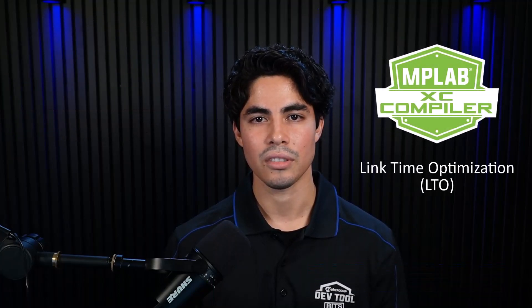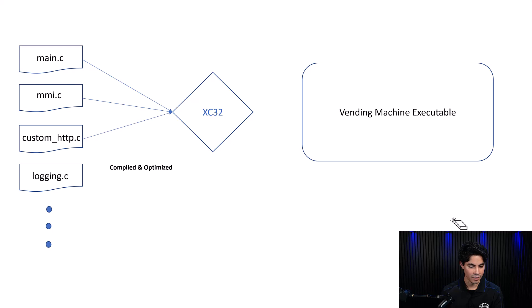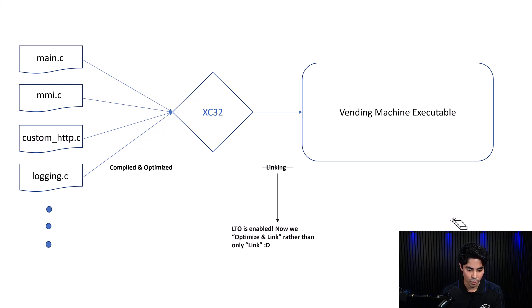What is a link-time optimization, and how can we use it to create faster and smaller applications? Real-world applications are written in parts. These parts are compiled and optimized on a file-by-file basis, and then finally linked together into an executable. LTO is a form of interprocedural optimization performed during the linking phase, and because it's happening at link-time, it takes advantage of being able to optimize the whole program rather than isolated parts.